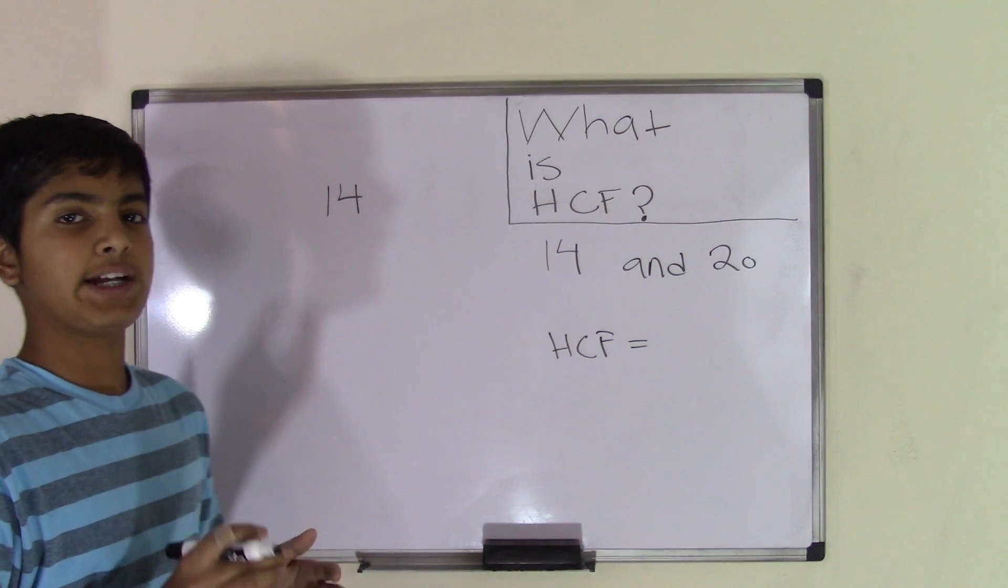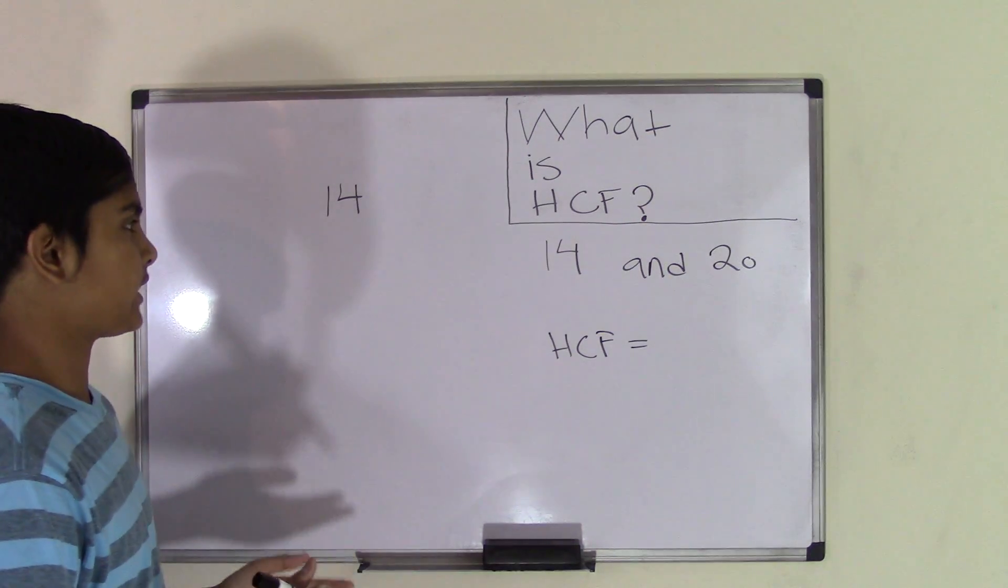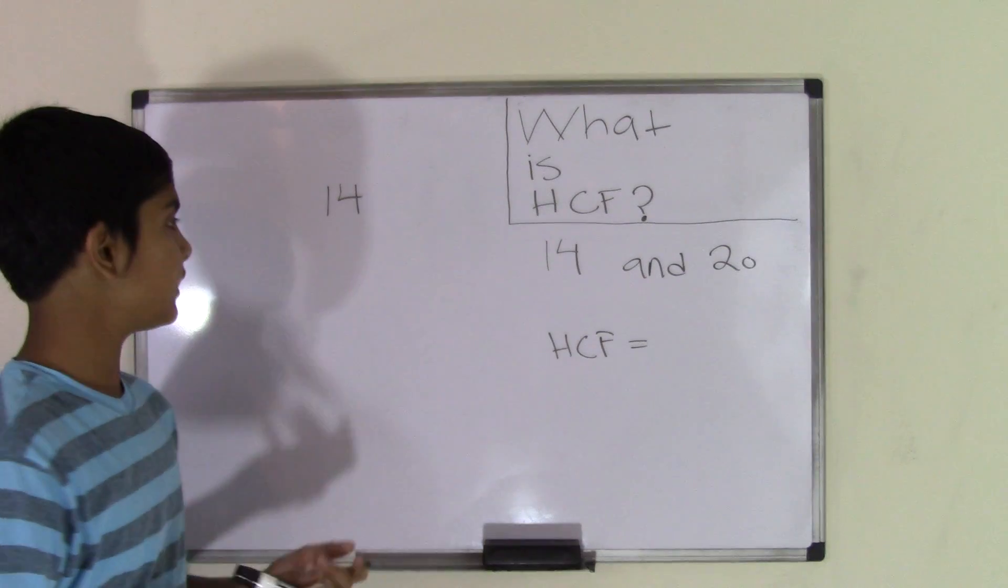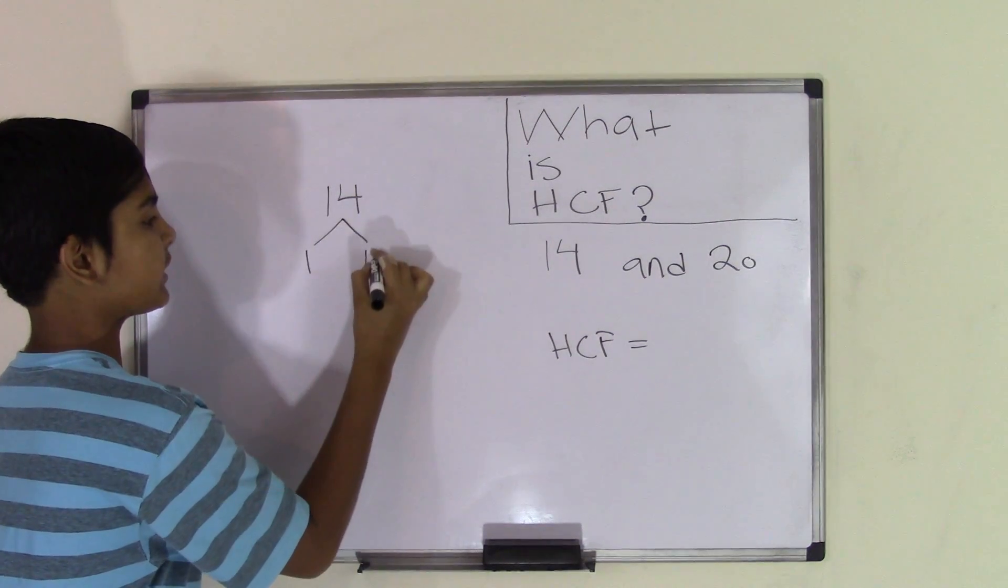Remember, we start off by finding the smallest number and multiplying it by another number to get the number 14. But we're not going to be using the number 1, because if we multiply 1 by 14, we'd get 14 again.